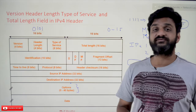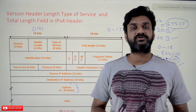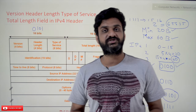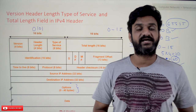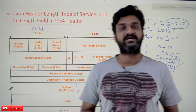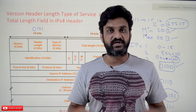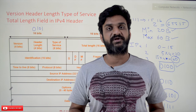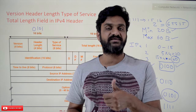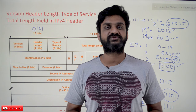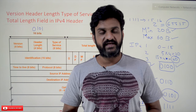So that covers the Version, Header Length, Type of Service, and Total Length fields in the IPv4 header. Hope you got clarity on these concepts. If you haven't subscribed to our channel, please subscribe and press the bell icon for the latest updates. Post any doubts in the comment section below, give a like if this was helpful, and share with your friends.